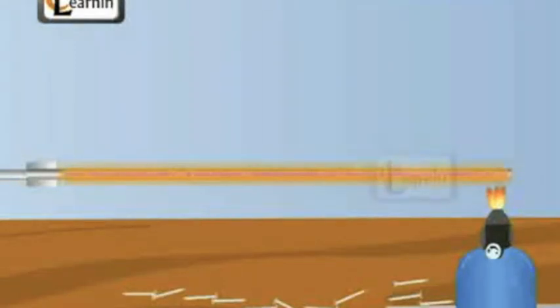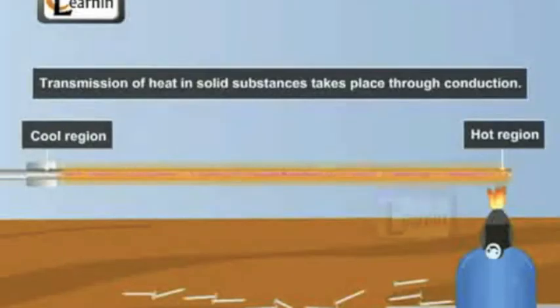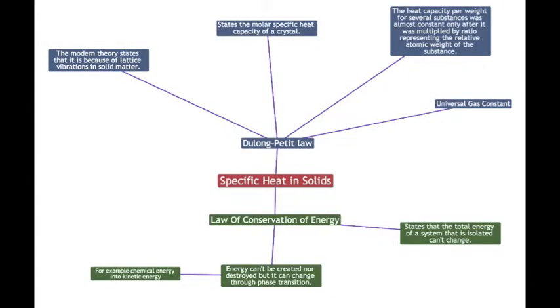Heat capacity concerns the proportion of heat an object gains or loses and the change in temperature given. The modern theory states that it is because of lattice vibrations in solid matter. It states the smaller specific heat capacity of a crystal. The heat capacity per weight of several substances was almost constant only after it was multiplied by a ratio representing the relative atomic weight of a substance.